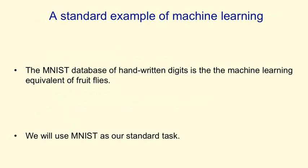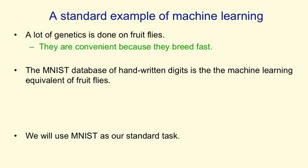In this course, I'm going to use a standard example for explaining many of the machine learning algorithms. In science, a lot of research uses standard organisms — in genetics, for example, a lot of work is done on fruit flies because they're convenient, they breed fast, and a lot is already known about their genetics. The MNIST database of handwritten digits is the machine learning equivalent of fruit flies.